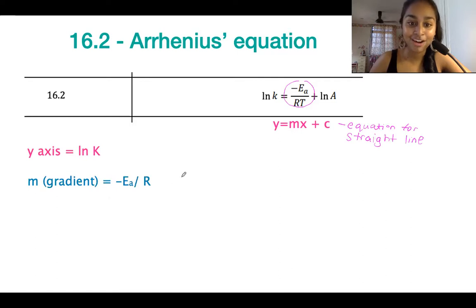So negative Ea over R. What this tells us is that you're looking at a negative curve. So the curve is going to slope downwards in that manner. The other thing is that this also tells us is that the larger the Ea, the steeper the gradient.